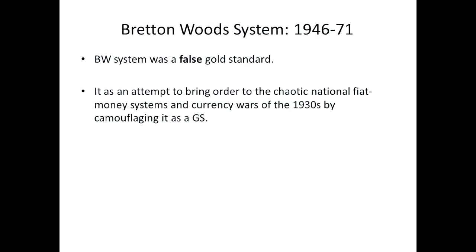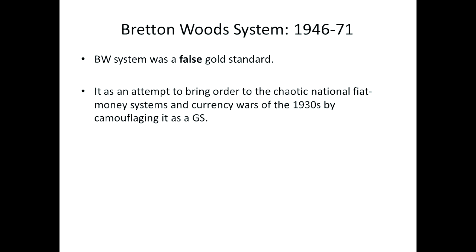Let's talk about the false gold standard. Bretton Woods was established in 1946. There was a meeting of the Allies in 1944 at a plush resort in New Hampshire known as Bretton Woods. The Allies wanted to reconstruct the world monetary system without tying their hands. They wanted to avoid the chaos of the 1930s when every country tried to make its currency cheaper to sell more exports — a beggar-thy-neighbor policy that brought world trade almost to a halt. So the Allies concocted a monetary system in which gold was a sort of cover — a phony, counterfeit gold standard — an attempt to bring order to the chaotic fiat monies.